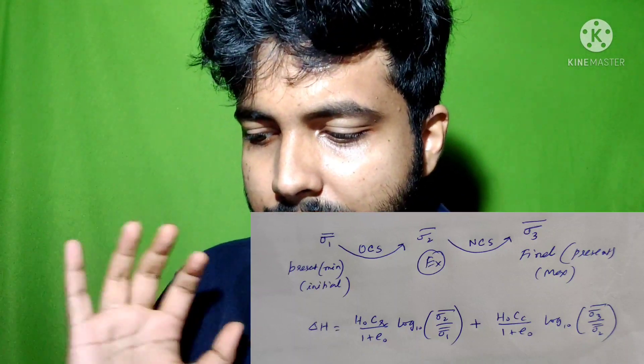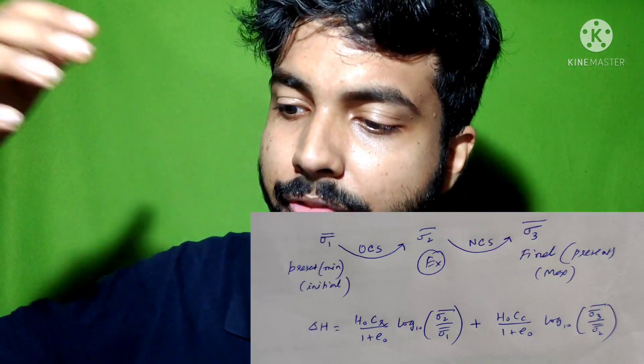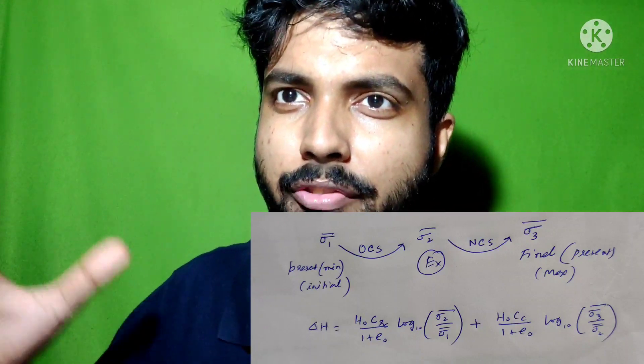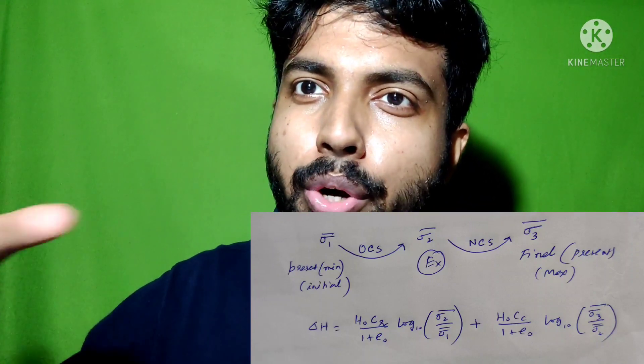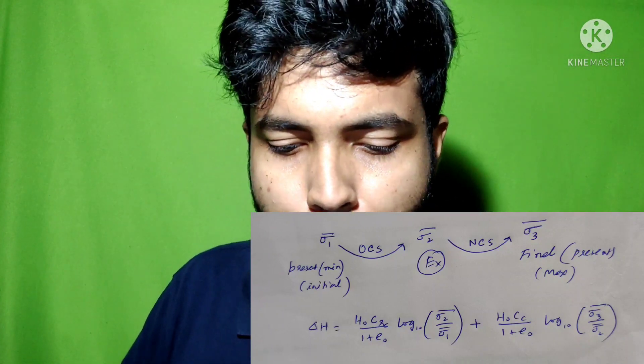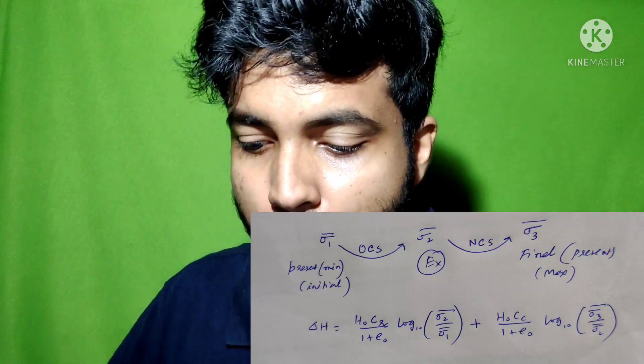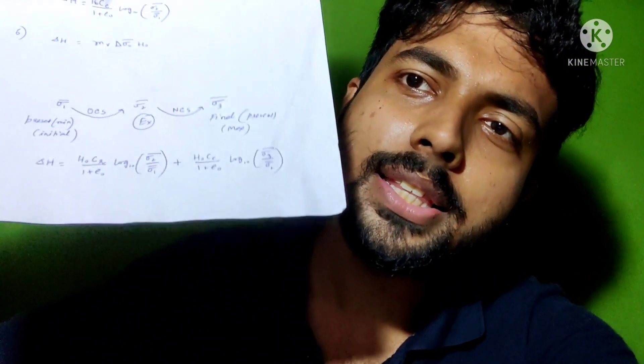For example, for consolidation settlement: σ1 bar is the initial present stress, σ2 bar is the earlier stress the soil has taken up, and σ3 bar is the final present stress after application of the surcharge or external load. If σ1 bar is less than σ2 bar which is less than σ3 bar, then going from σ1 to σ2 the soil behaves as over-consolidated, and from σ2 to σ3 it behaves as normally consolidated. In the case of over-consolidated soil, CR (recompression index) is used in the formula instead of CC (compression index) for normally consolidated soil. I have represented all of this in a single diagram.